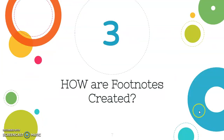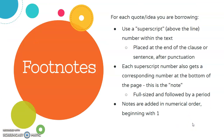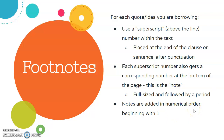Let's jump in with creating footnotes. The overall idea is that for each quote or idea you borrow and add to your paper, you will make a note in order to cite your source. To do this, you will need to use a superscript — a number placed above the line within the text — at the end of the clause or sentence after any punctuation. Each superscript number also gets a corresponding number at the bottom of the page. This is the note. The number at the bottom of the page is full-sized and followed by a period. Notes are added in numerical order beginning with one.